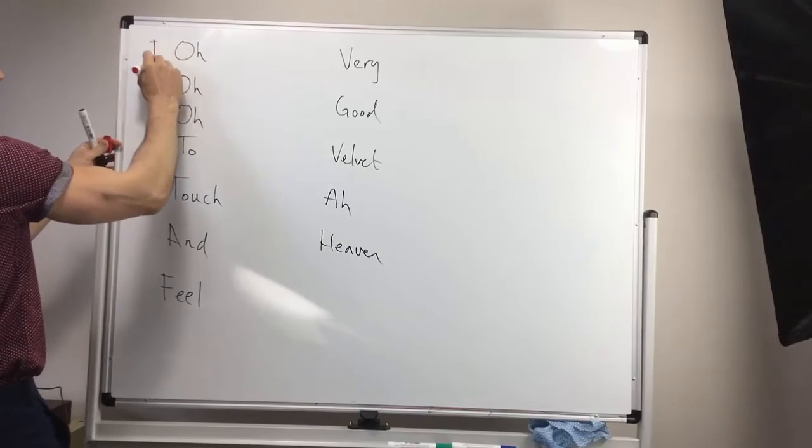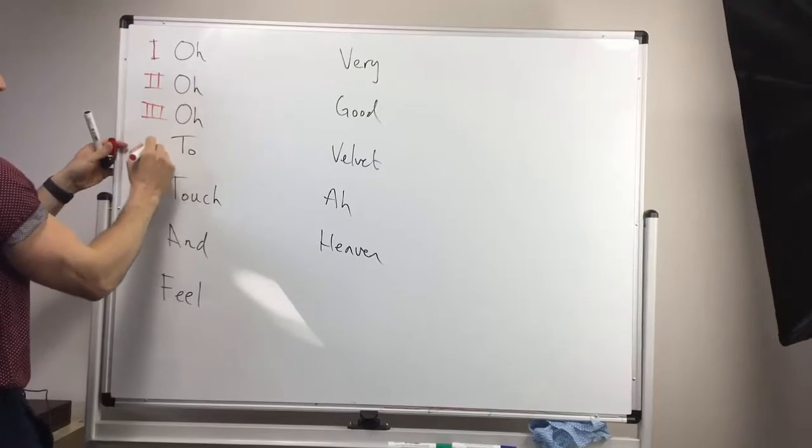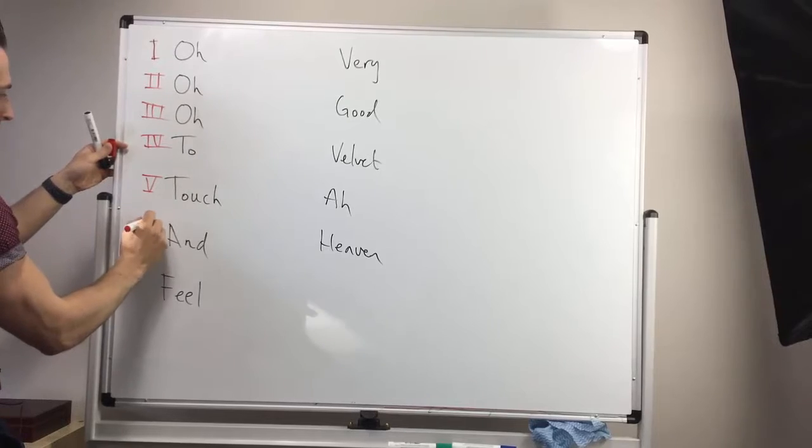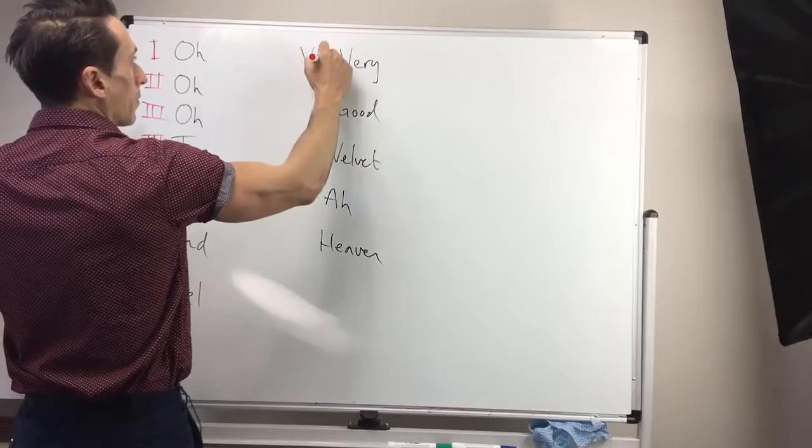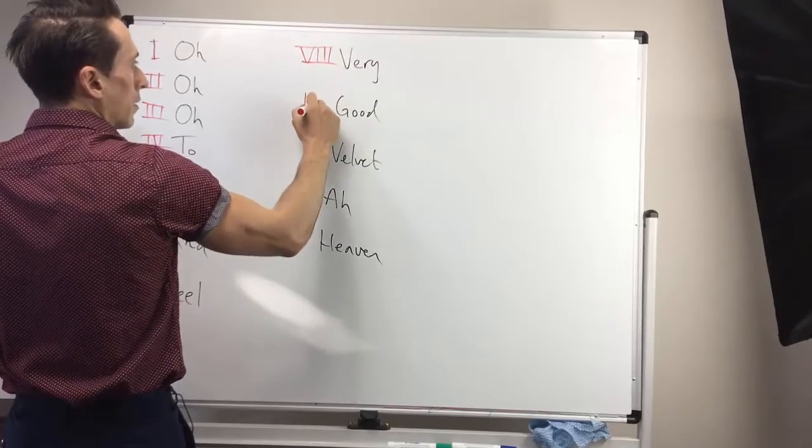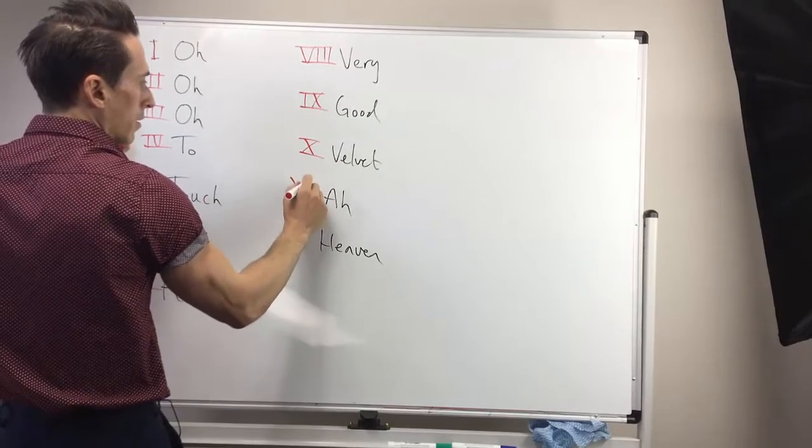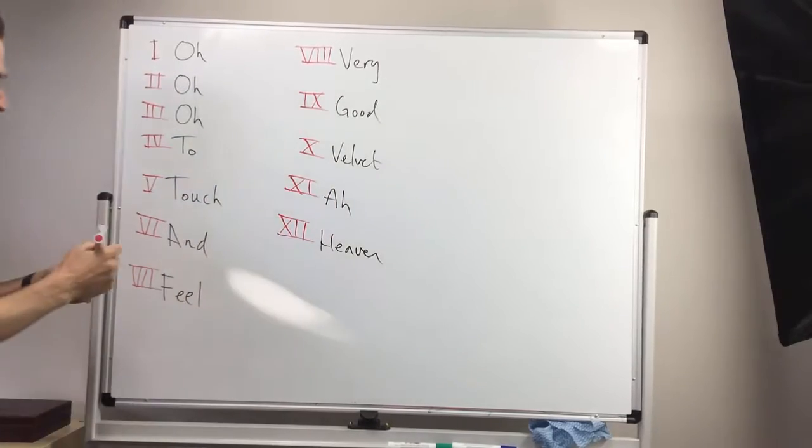So this is the first cranial nerve, second, third, fourth, fifth, sixth, seventh, eighth, ninth, tenth, eleventh, and twelfth cranial nerve.